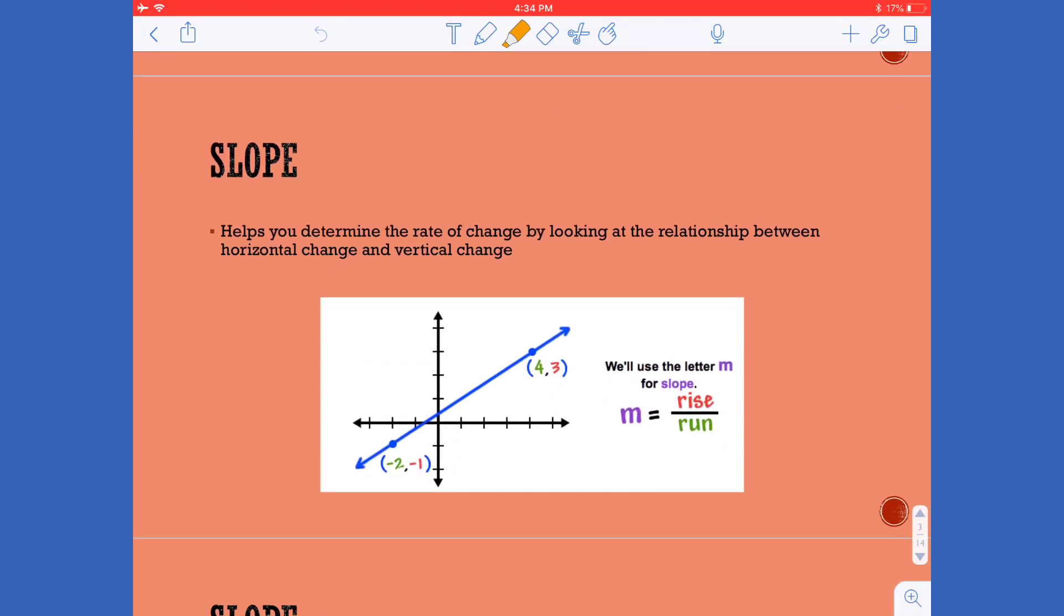When we talk about slope, slope helps us to determine the rate of change by looking at the relationship between horizontal change and vertical change. So that word rate of change is super critical when thinking about slope.